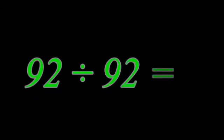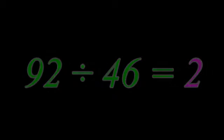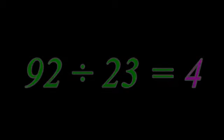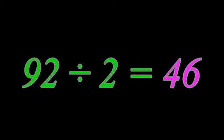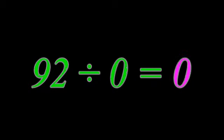92 divided by 92 equals 1. 92 divided by 46 equals 2. 92 divided by 23 equals 4. 92 divided by 4 equals 23. 92 divided by 2 equals 46. 92 divided by 1 equals 92. 92 divided by 0 equals 0.